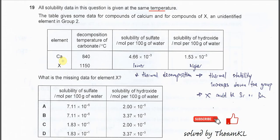First in this table, the decomposition temperature of calcium carbonate is 840, and the decomposition temperature of element X carbonate is 1150. This means it needs a higher temperature to decompose element X carbonate.